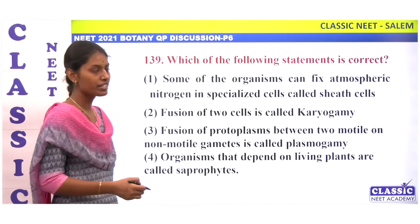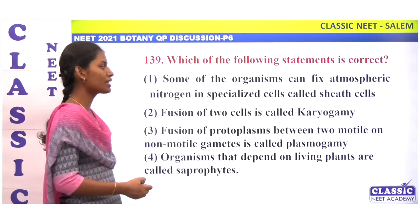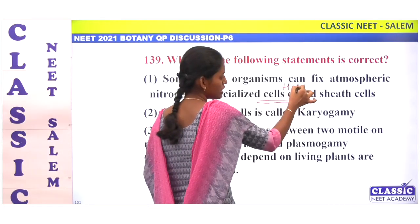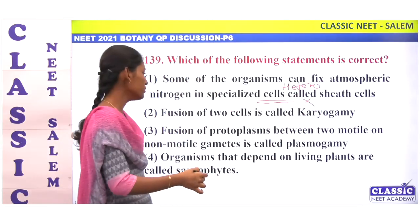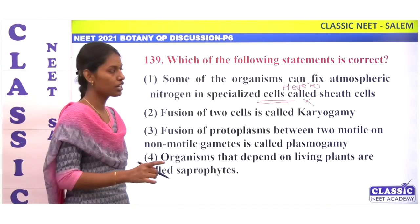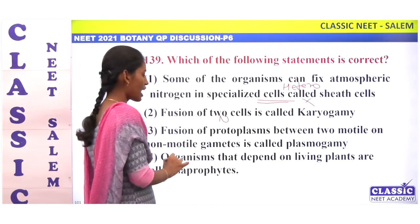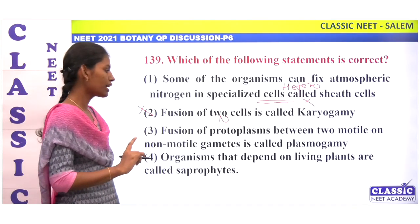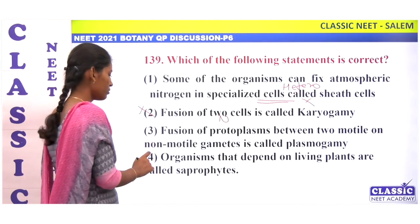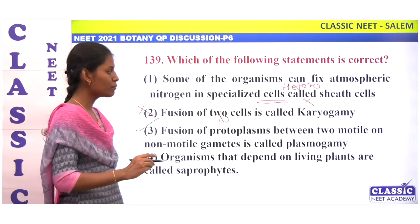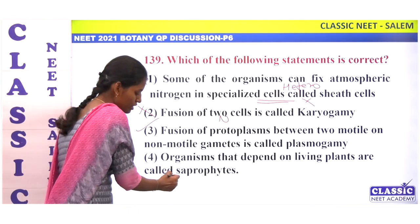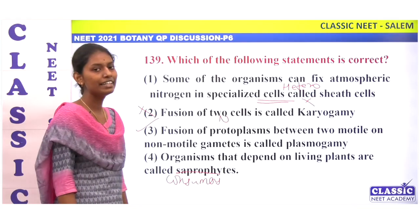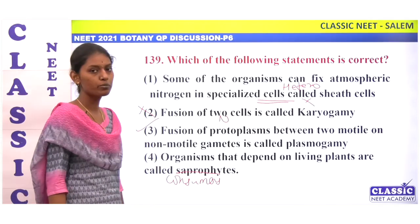Which of the following statements is correct? Some organisms can fix atmospheric nitrogen in specialized cells called heterocysts. The fusion of two nuclei is called karyogamy — not fusion of two cells. The fusion of protoplasts between two gametes is called plasmogamy — this is correct. Organisms that depend on living plants are not saprophytes — saprophytes feed on dead and decaying organic matter. Correct statement is option 3.